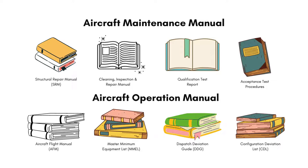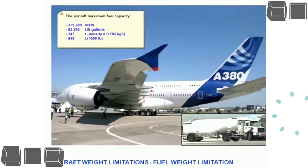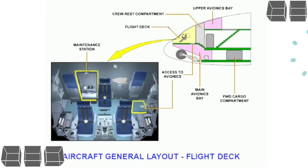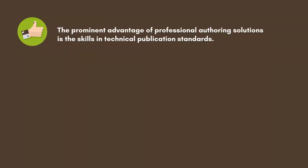There also exist operation manuals which give information on flights and aircraft operations. The new age of technical publication has an important role to play for organizations involved in technical fields. As organizations upgrade their systems and focus on enhanced ways to monitor and execute technical data, professional technical authoring services can provide the required knowledge to address each aspect of the technical documentation process. One of the prominent advantages of professional authoring solutions is the skill in technical publication standards.